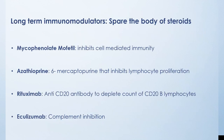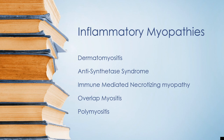Long-term immunomodulators are important in generalized myasthenia management to spare steroids. Commonly used agents include mycophenolate mofetil, which inhibits cell-mediated immunity, and azathioprine, a 6-mercaptopurine analog that inhibits lymphocyte proliferation. Rituximab, an anti-CD20 antibody that depletes CD20 B lymphocytes, is especially used in MuSK myasthenia, as these cells secrete IgG4 MuSK antibodies. Eculizumab, a complement inhibitor, has also been used in refractory myasthenia cases.